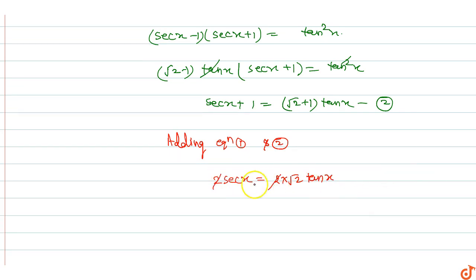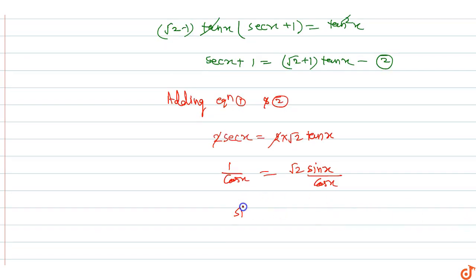Two cancels out, so one by cos x equals root 2 into sine x upon cos x. Therefore, sine x equals one by root two.